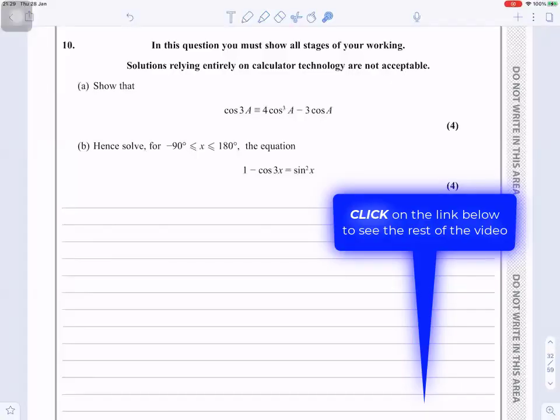Question number 10. Show that cos3a is identical to 4 cos³a minus 3 cosa.